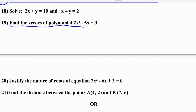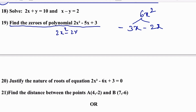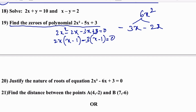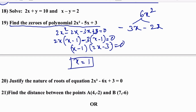Find the zeros of 2x² − 5x + 3 = 0. Multiply first and last terms: 2×3 = 6; split −5x as −2x − 3x. Factorize: 2x(x−1) − 3(x−1) = 0, giving (x−1)(2x−3) = 0. Zeros are x = 1 and x = 3/2.